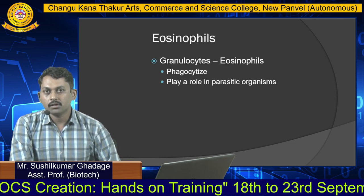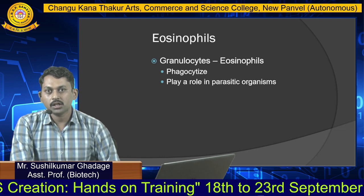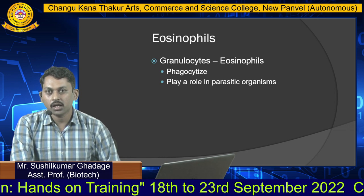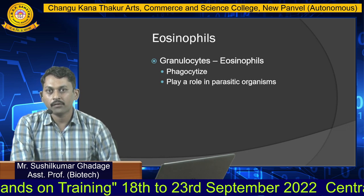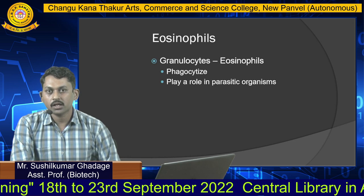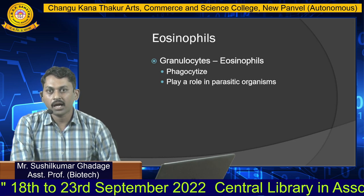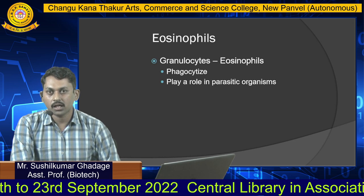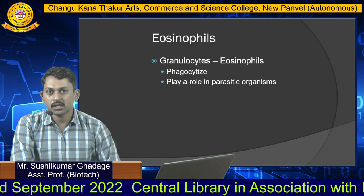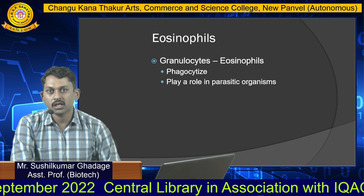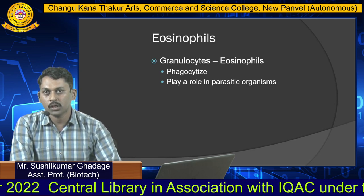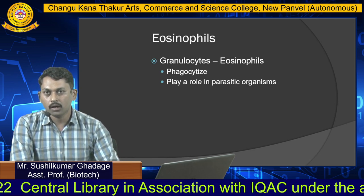The second type is eosinophils. They are phagocytic in nature and play a role against parasitic organisms — they are anti-parasitic in nature. In anti-parasitic infections, eosinophils have a major role.